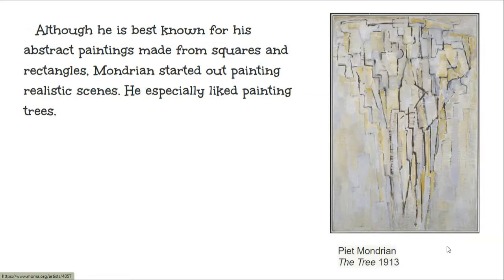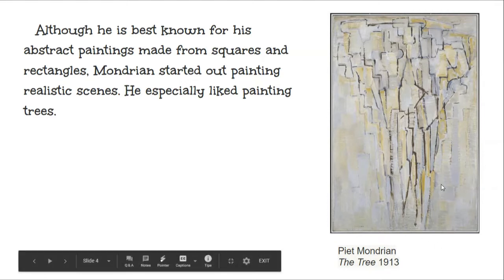Although he is best known for his abstract paintings made from squares and rectangles, Mondrian started out painting realistic scenes. He especially liked painting trees. Can you see a tree in this picture?